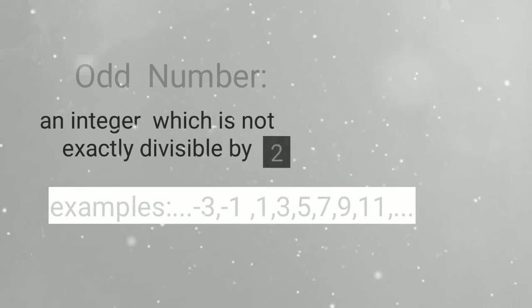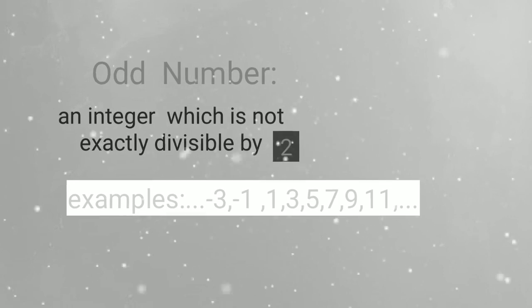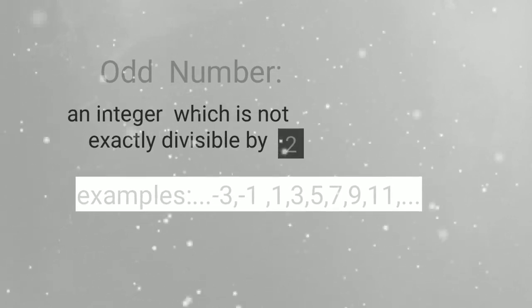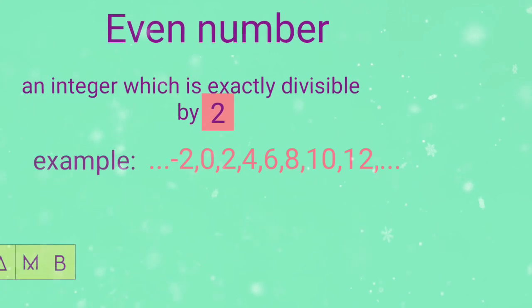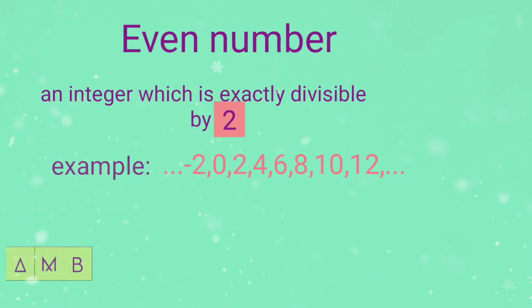Odd number: an integer which is not exactly divisible by 2. Examples: -3, -1, 1, 3, 5, and so on. Even number is an integer which is exactly divisible by 2.